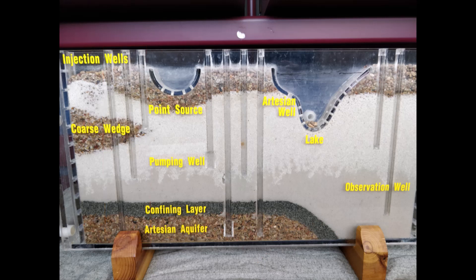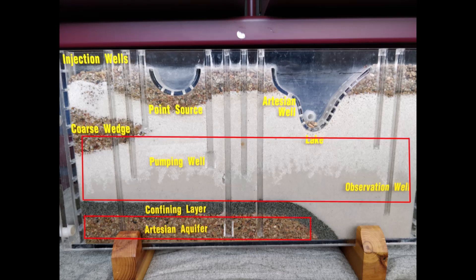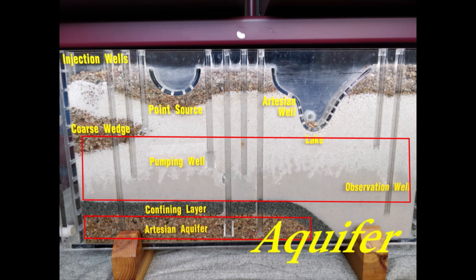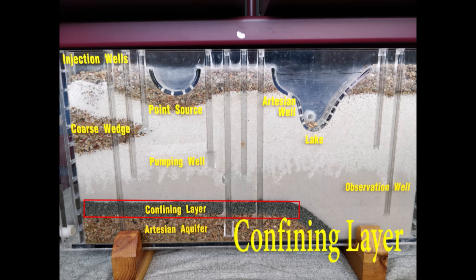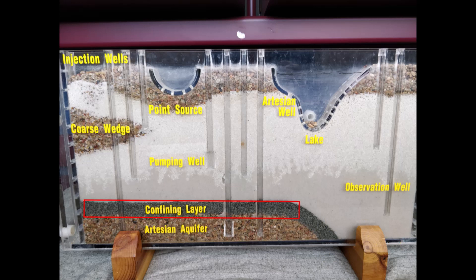Let's look at the groundwater units: the sand aquifer and the gravel aquifer. Aquifers are underground permeable rock formations that hold the groundwater we want to pump. But what is this layer between the sand and gravel aquifer? This is the confining layer made of clay which, if you recall, is impermeable, meaning little to no water passes through. The artesian aquifer is confined by this layer of clay.